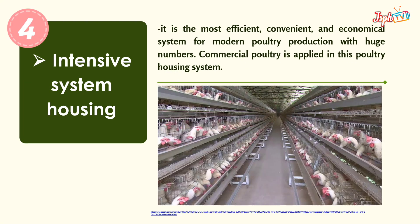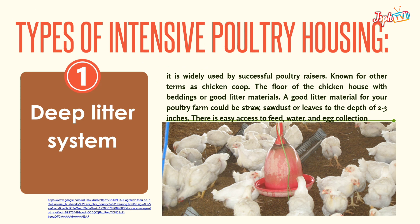Fourth, the intensive system housing — the most efficient, convenient, and economical system for modern poultry production with huge numbers. Commercial poultry is applied in this poultry housing system. We have types of intensive poultry housing. First, the deep litter system.